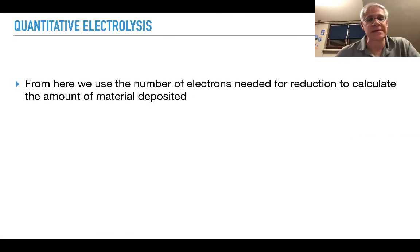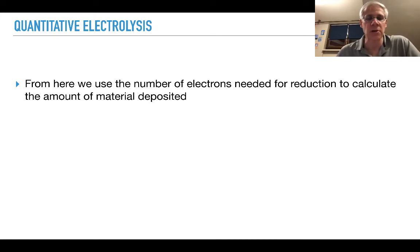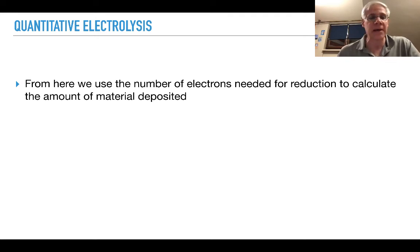From moles of electrons, we look at how many electrons are needed for reduction to calculate the amount of material deposited. This depends on the charge of the metal ion. If the metal ion has a 1+ charge, it takes one mole of electrons per mole of metal. A 2+ charge requires two moles of electrons, a 3+ charge requires three moles, and so on. We have to bring that charge down to zero in order to deposit metal atoms.